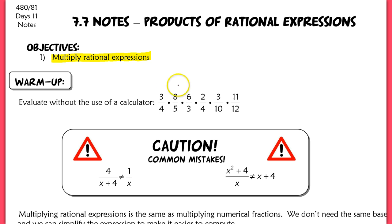Each one of these is representing a ratio, which is just a rational number. Without a calculator, this is something that might look very difficult to evaluate, but it's actually pretty easy if we try to look for stuff that will cancel. We can simplify these fractions to make them easier to deal with. That's the same idea we're going to apply when we find a product of a rational expression.